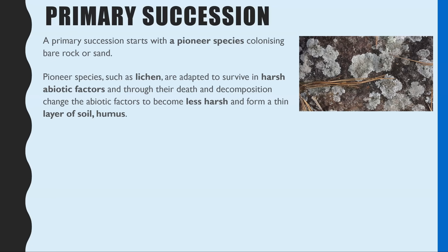Both species bring a mutual benefit. Lichen is made up of algae and fungus. The algae can photosynthesise, giving lichen its slightly green colour, creating glucose and carbohydrates which it shares with the fungus. The fungus has two advantages: it can absorb water like a sponge when it rains, retaining water that would otherwise run off the rock; and it can release extracellular enzymes onto the rock to break it down and release minerals, which can then be absorbed by both the algae and the fungi.